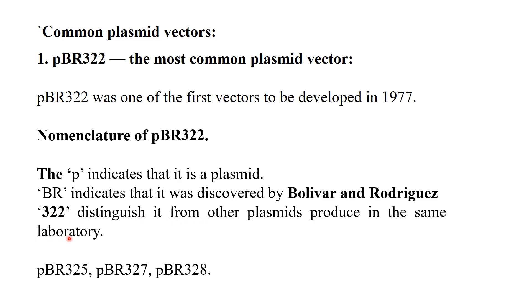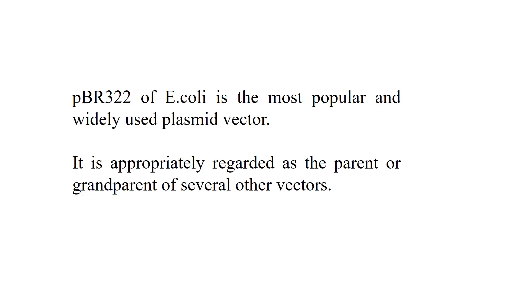'322' distinguishes it from other plasmids produced in the same laboratory by Bolivar and Rodriguez. Other plasmids such as pBR325, pBR327, and pBR328 also exist and were synthesized in the same laboratory. So 'p' is for plasmid, 'BR' for the names of the scientists Bolivar and Rodriguez, and '322' is the number that distinguishes it from other plasmids produced in that same laboratory.